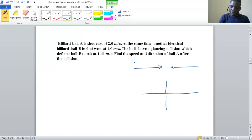I have ball A and ball B. Ball A is moving in the east direction and ball B is moving toward the west. That is before collision.